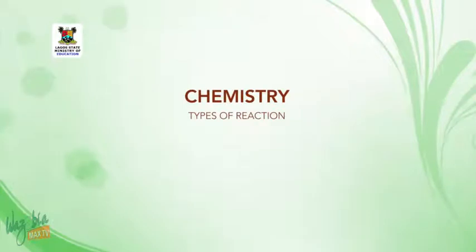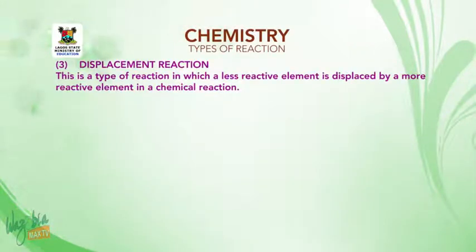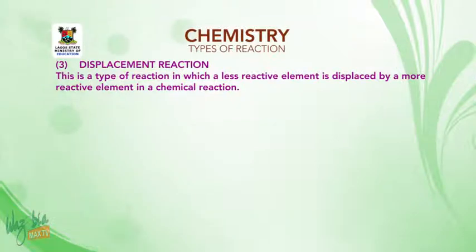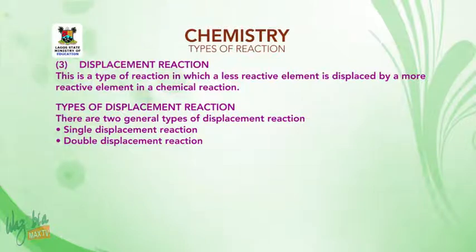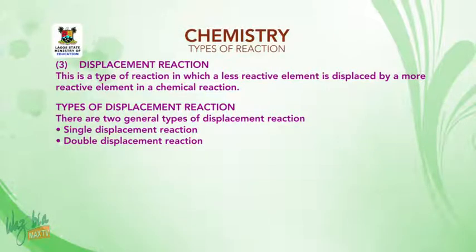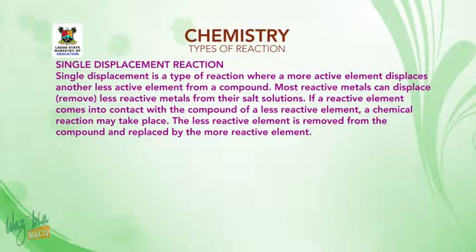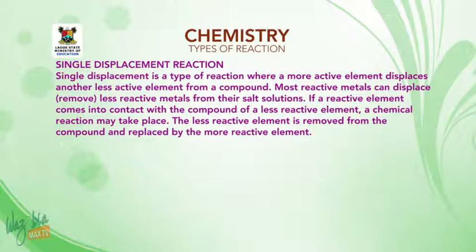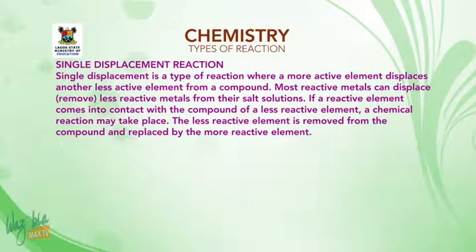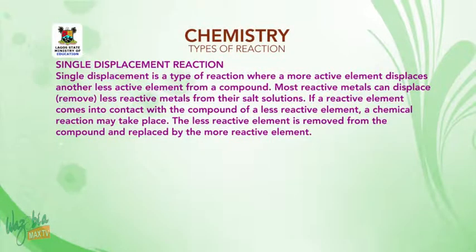Displacement reaction. This is a type of reaction in which a less reactive element is displaced by a more reactive element in a chemical reaction. There are two general types: single displacement reaction and double displacement reaction. Single displacement reaction is a type where a more active element displaces another less active element from a compound. Most reactive metals can displace or remove less reactive metals from their salt solution. If a more reactive element comes in contact with the compound of a less reactive element, a chemical reaction may take place.